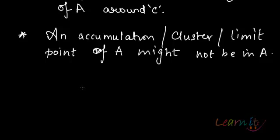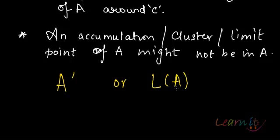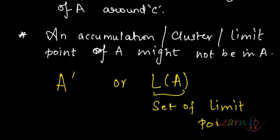The set of accumulation points is called A-dash, or L of A. L(A) denotes the set of limit points.